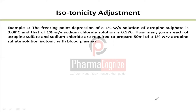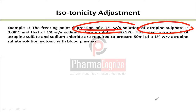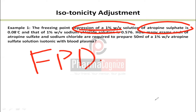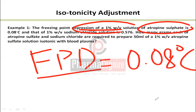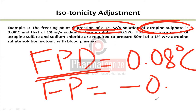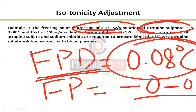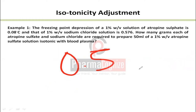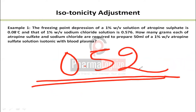Now, if we have a question: the freezing point depression of a 1% weight by volume solution of atropine sulfate is 0.08°C. This means my current atropine sulfate solution has a freezing point depression of only 0.08°C, but I need it to reach 0.52°C to make the solution iso-osmotic with blood.